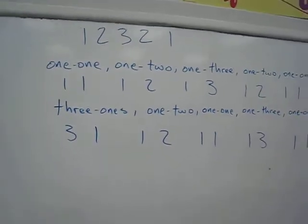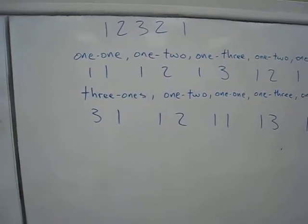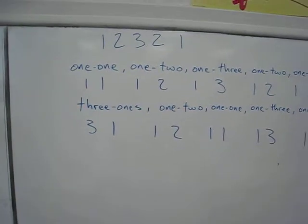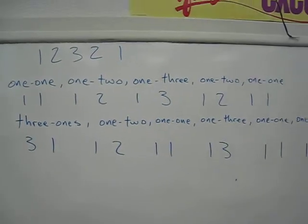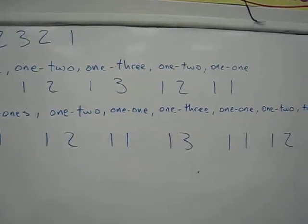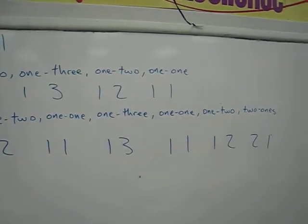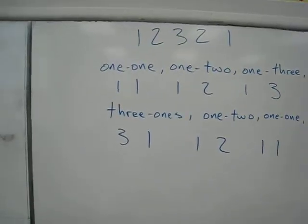So this obviously up there is the first line and you can see, I'm describing the line above it just with words. So there's one-one, one-two, one-three, one-two, one-one. And then below that, I just write it out in numbers.